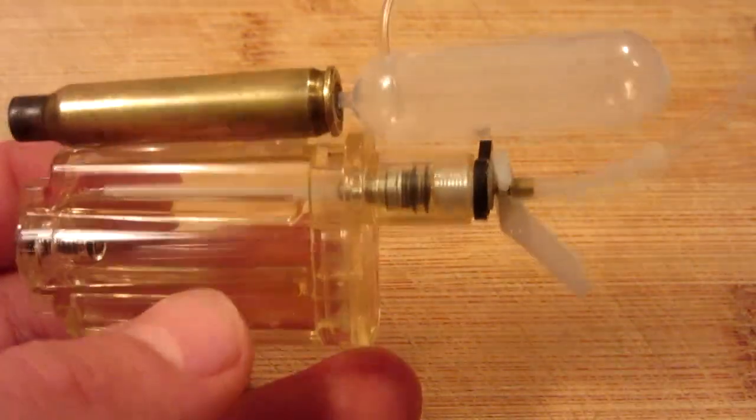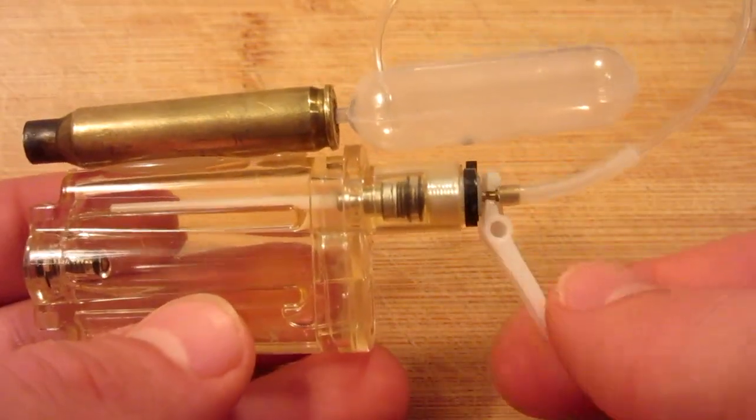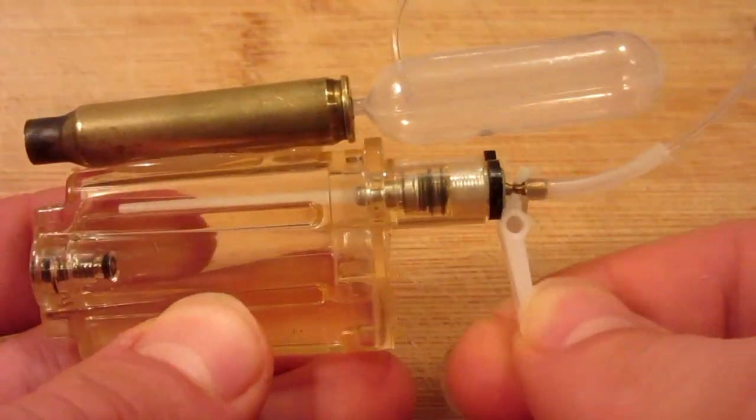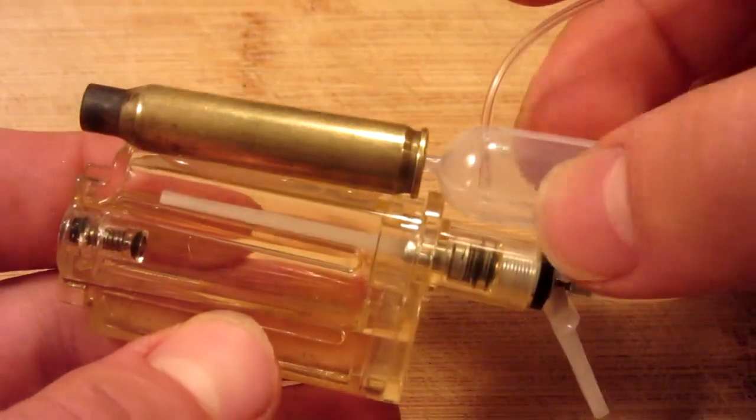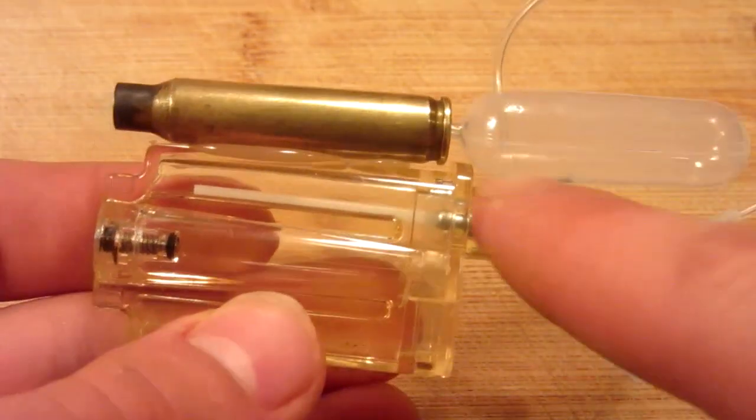As you can see, there's the tube inside the pipette, and when we push on this trigger, the gas will go through the tube and into the pipette. Then when you squeeze this, all the gas will go into the cartridge and out the barrel.